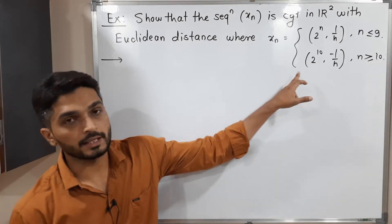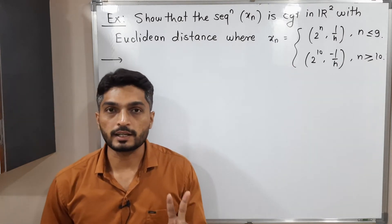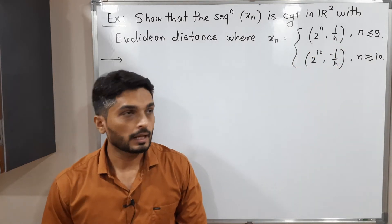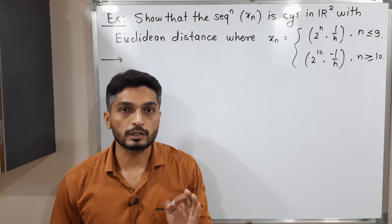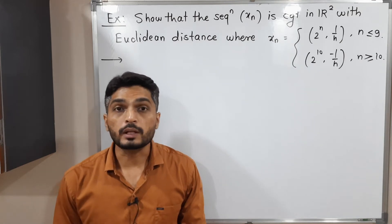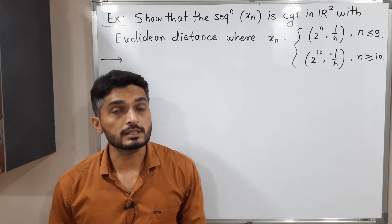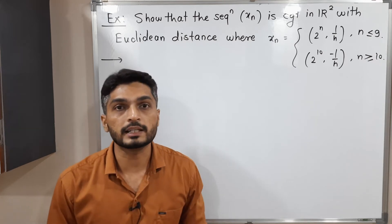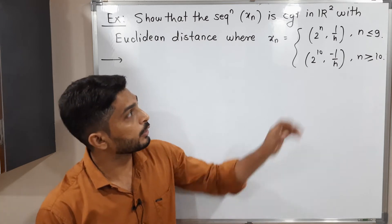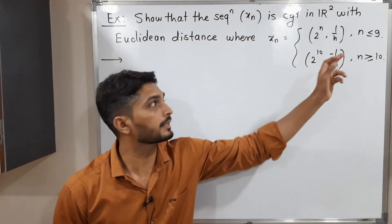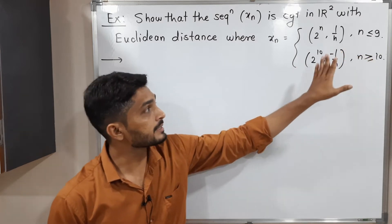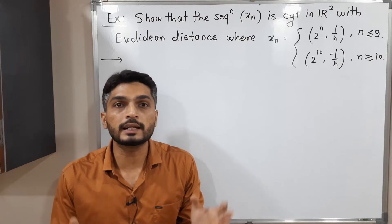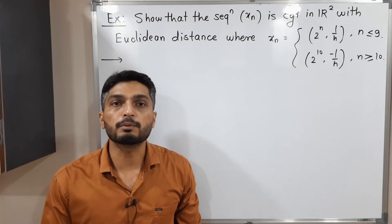So Xn is defined in two different ways. The first definition is true for n less than or equal to 9 and the second definition is true for n greater than or equal to 10. We know that the convergence of a sequence is not affected by the first finite terms — it depends on the remaining infinite terms.